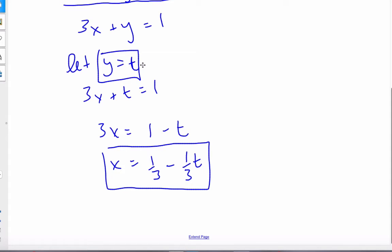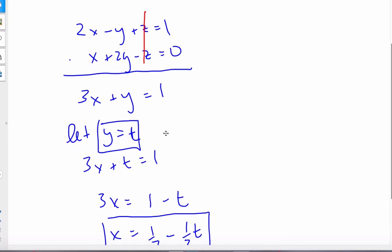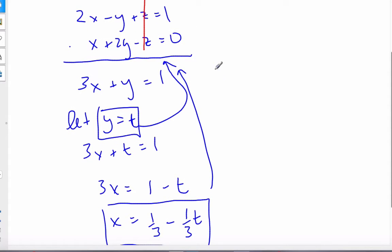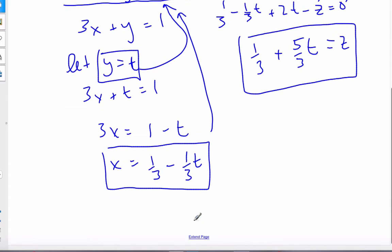Now to find z, I take these two values and plug them into either one of these equations. If I plug it into this second plane, I get 1/3 - 1/3t + 2t - z = 0. Rearranging, z equals 1/3 plus 5/3t.